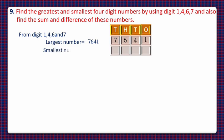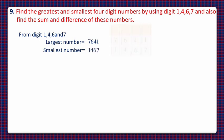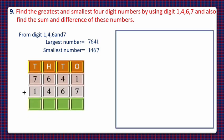Now for the smallest four-digit number, we'll write the given digits in increasing or ascending order. We'll write 1 in the thousands column, 4 in hundreds, 6 in tens, and 7 in ones column to make the smallest number 1467. Next, to find the sum of these numbers, let's take the currency notes for 7641.